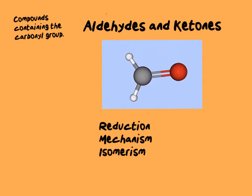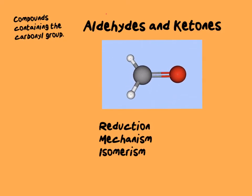This term we're going to be looking at compounds containing the carbonyl group, that's the C double bond O group. We're going to be focusing in on reduction, the mechanism with which they react, and also looking at how we can arrive at a form of isomerism called stereoisomerism.